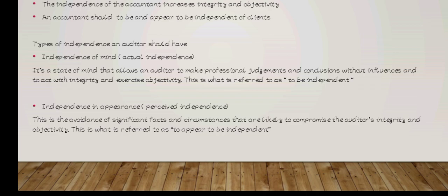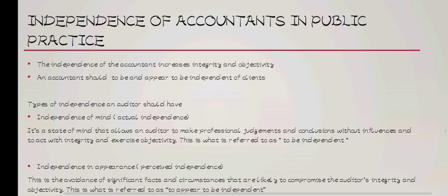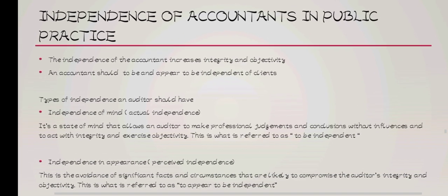So those are the two types of independency: independence of mind, where you make professional judgments and conclusions without influences; and independency in appearance, where you avoid anything that can compromise your integrity and objectivity as an auditor. That is all about the independency of accountants in public practice.